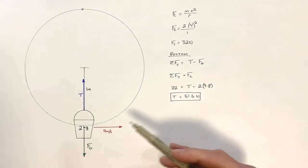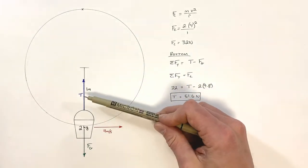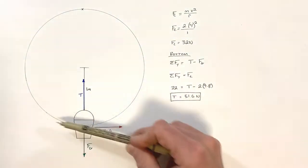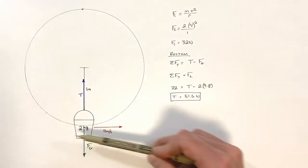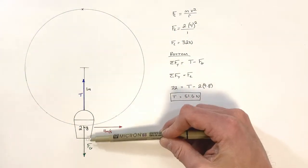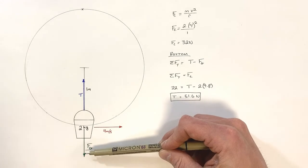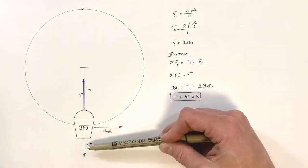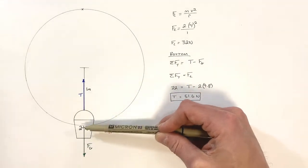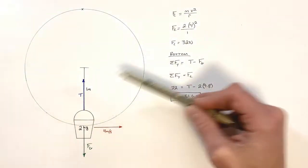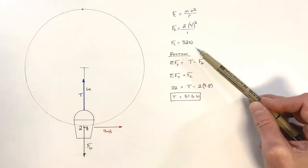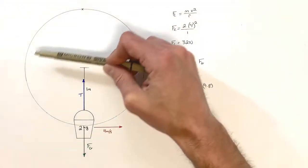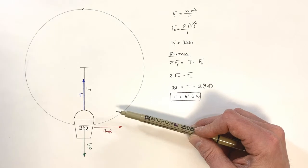What's really going on here is the tension in the cable is trying to force the bucket to go in a circle, but gravity is trying to keep that from happening. So tension has to overcome gravity and still provide enough centripetal force for this bucket to move in a circle of radius one meter.